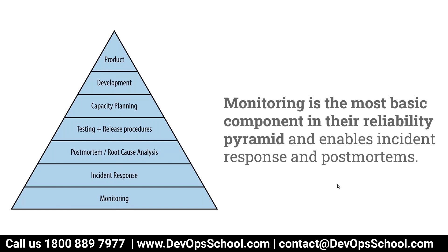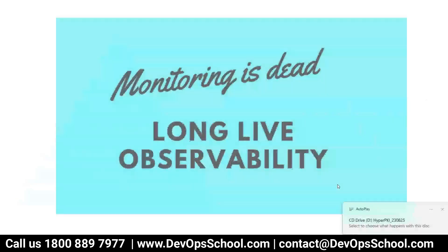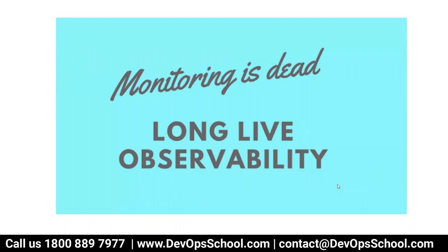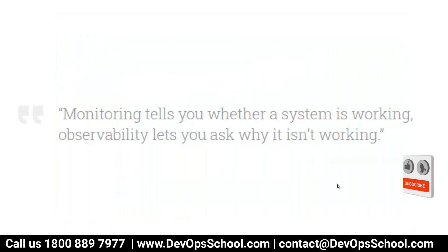Monitoring is the most basic component in the reliability pyramid and enables incident response and postmortems. That means we want to check whether your product is reliable or not, and through monitoring we identify issues, get incidents, respond, and do postmortems. But you know what — monitoring is dead. Monitoring tells you whether a system is working or not working; observability lets you ask why it isn't working.